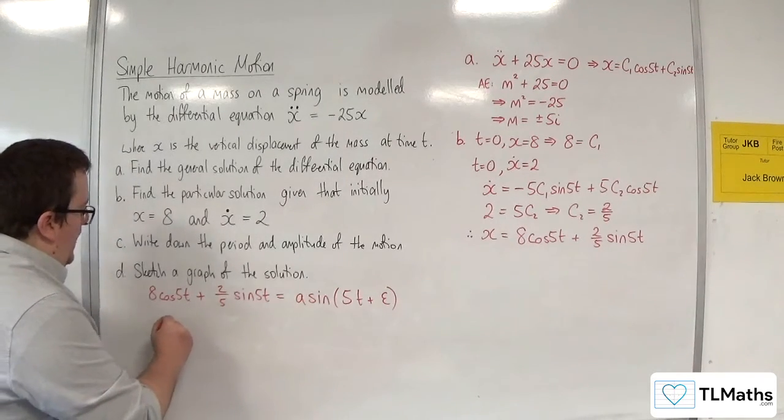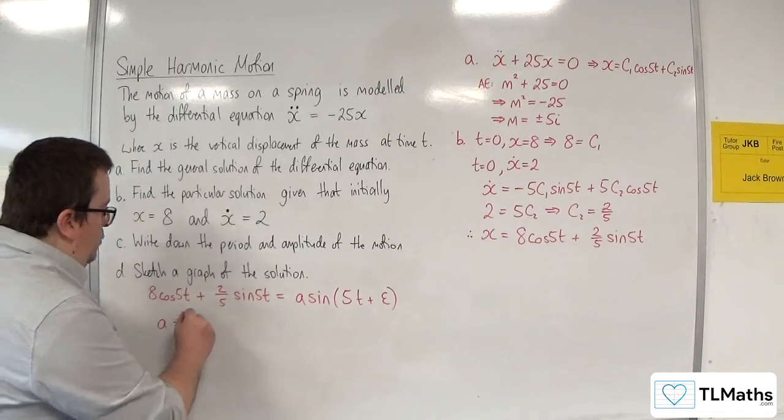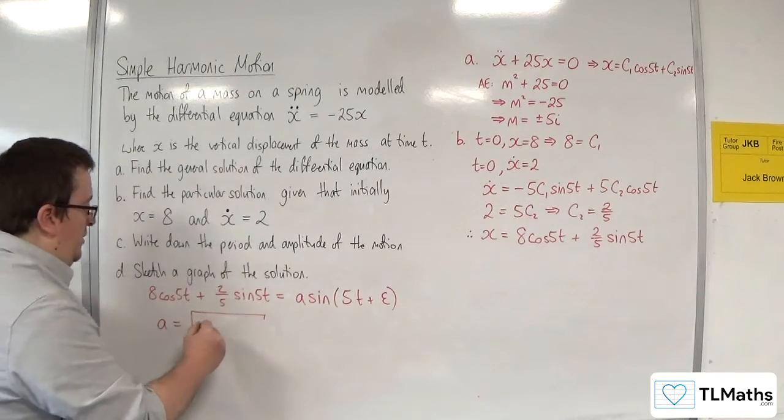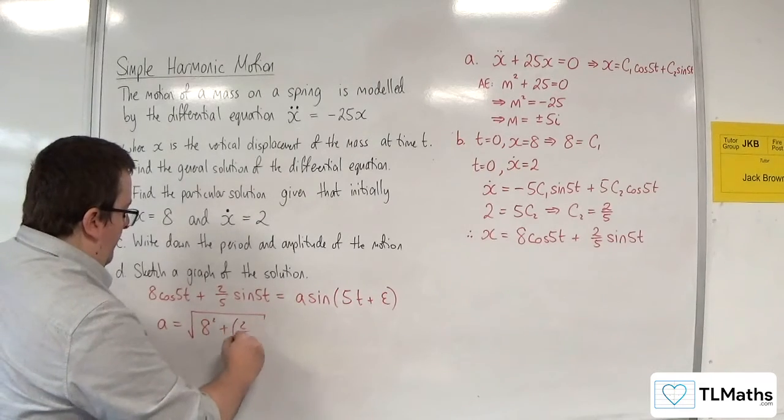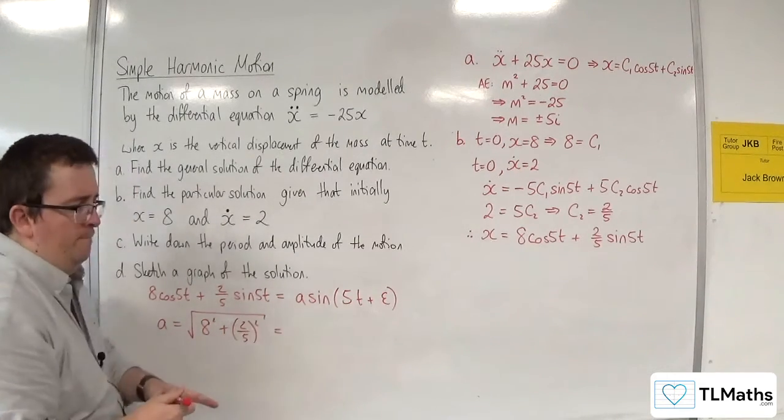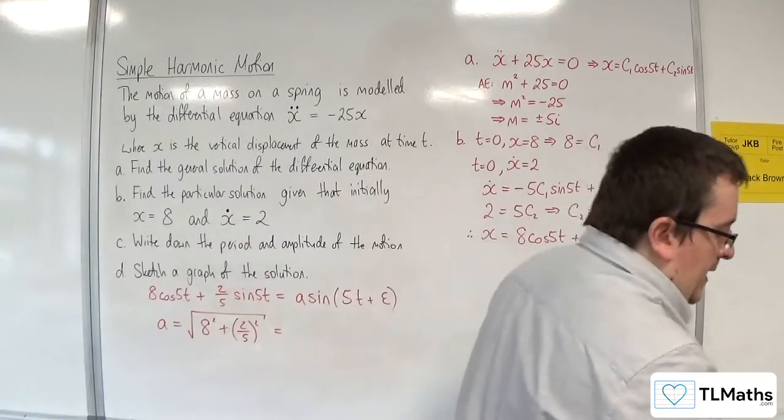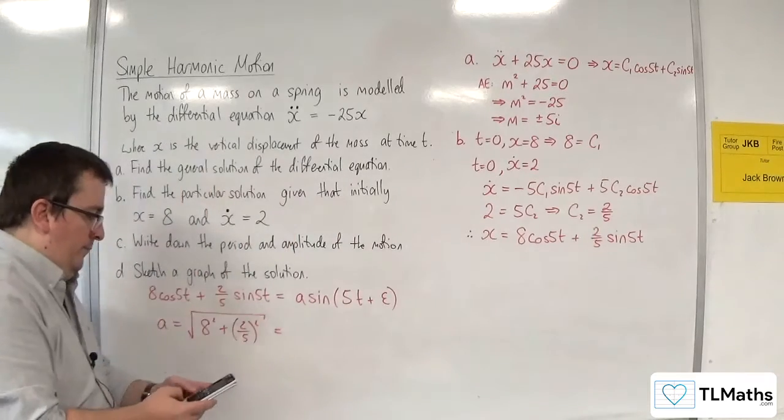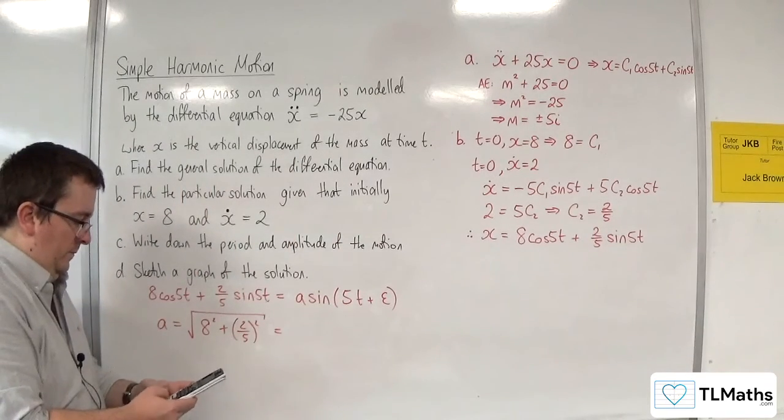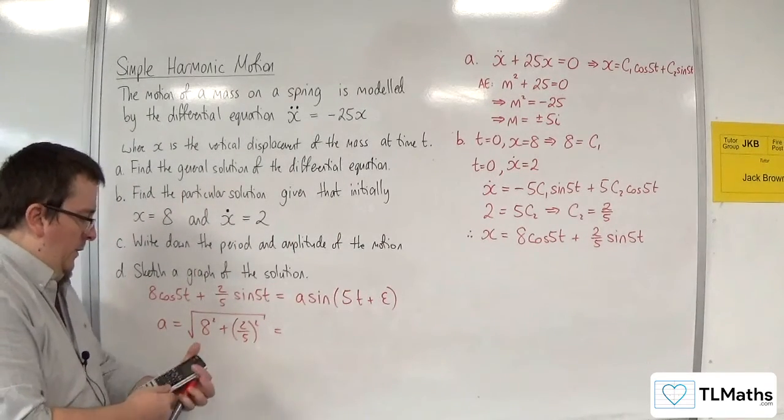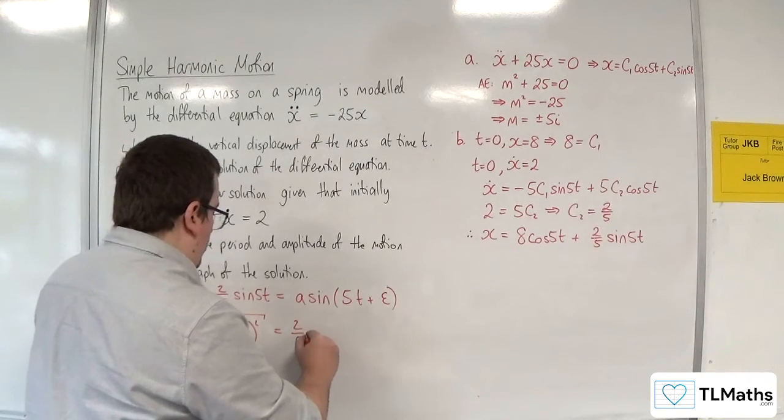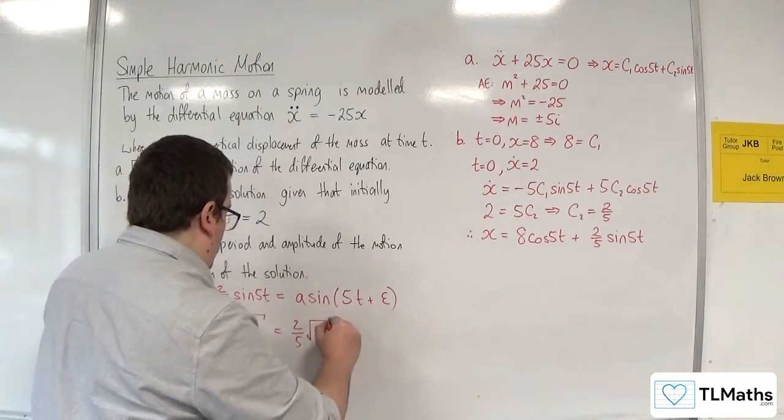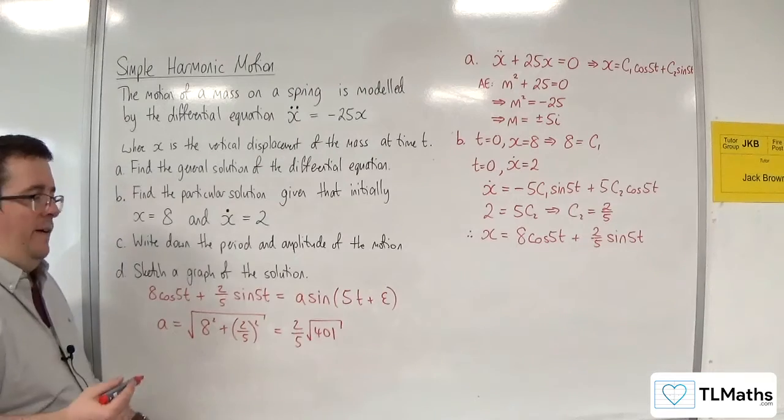So a would be equal to the square root of the 8² and the 2/5 squared. So we should get 2/5 of root 401. So that's my exact value for a.